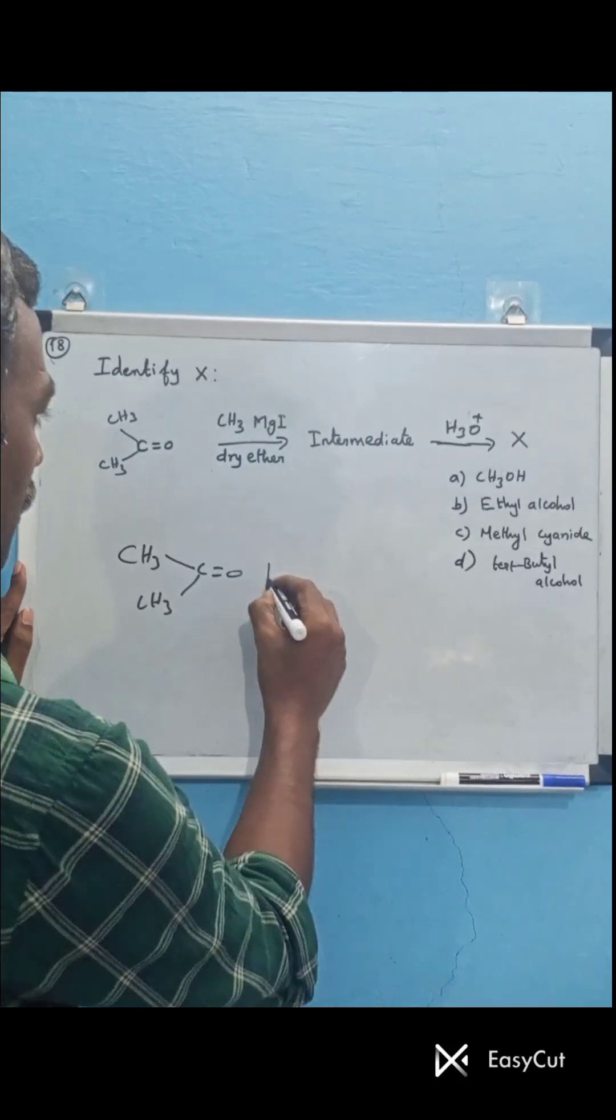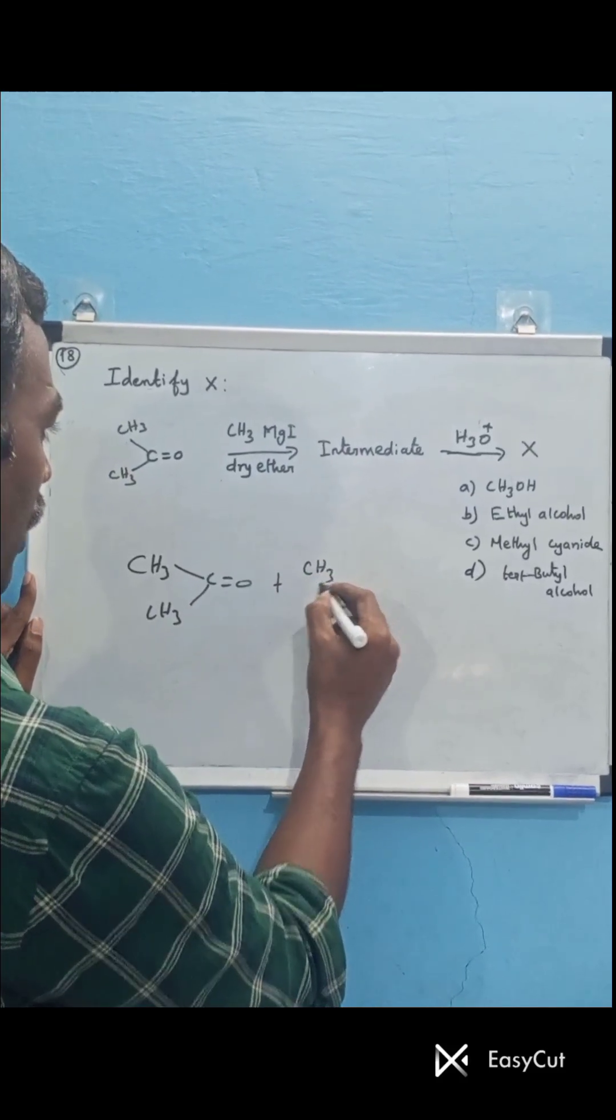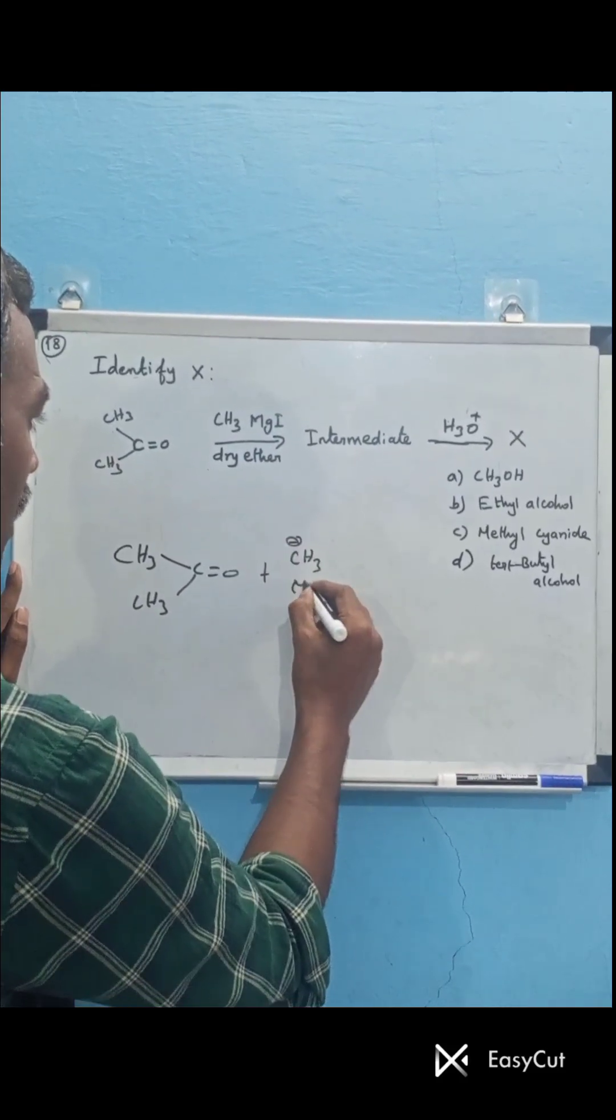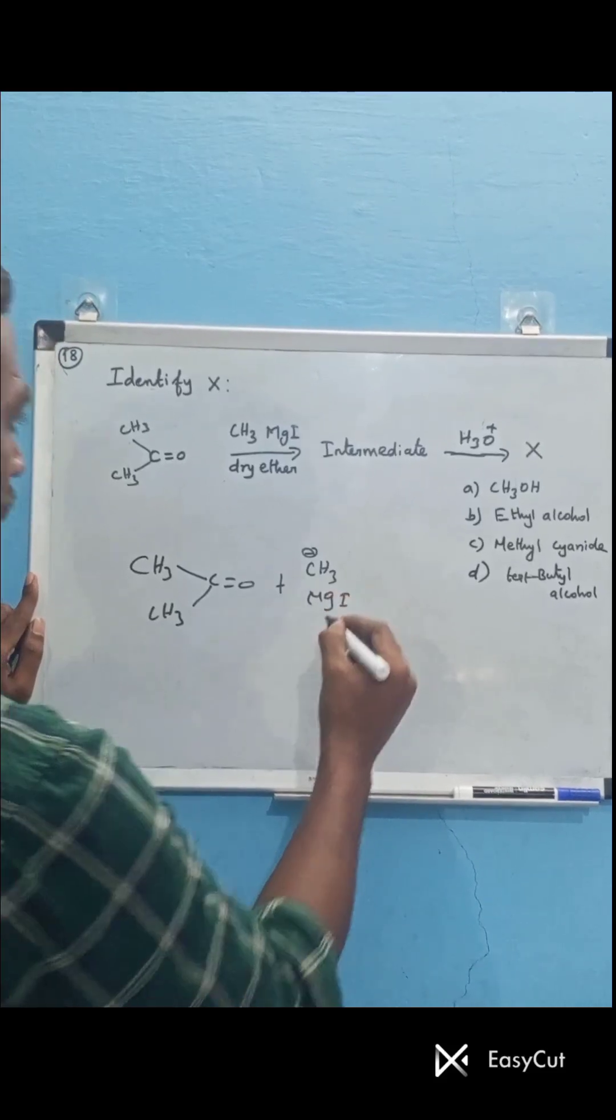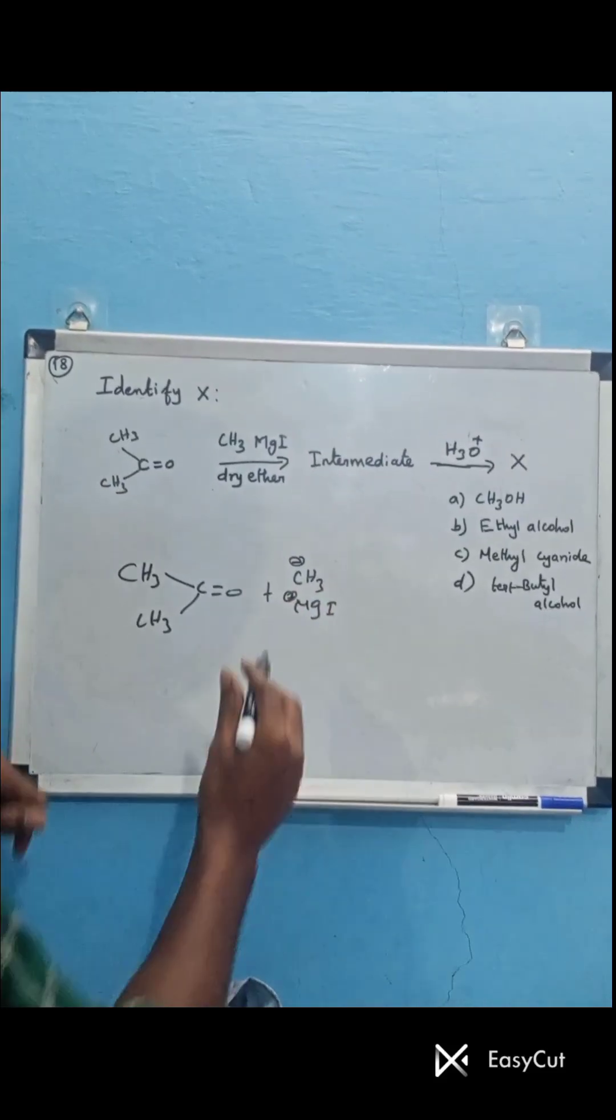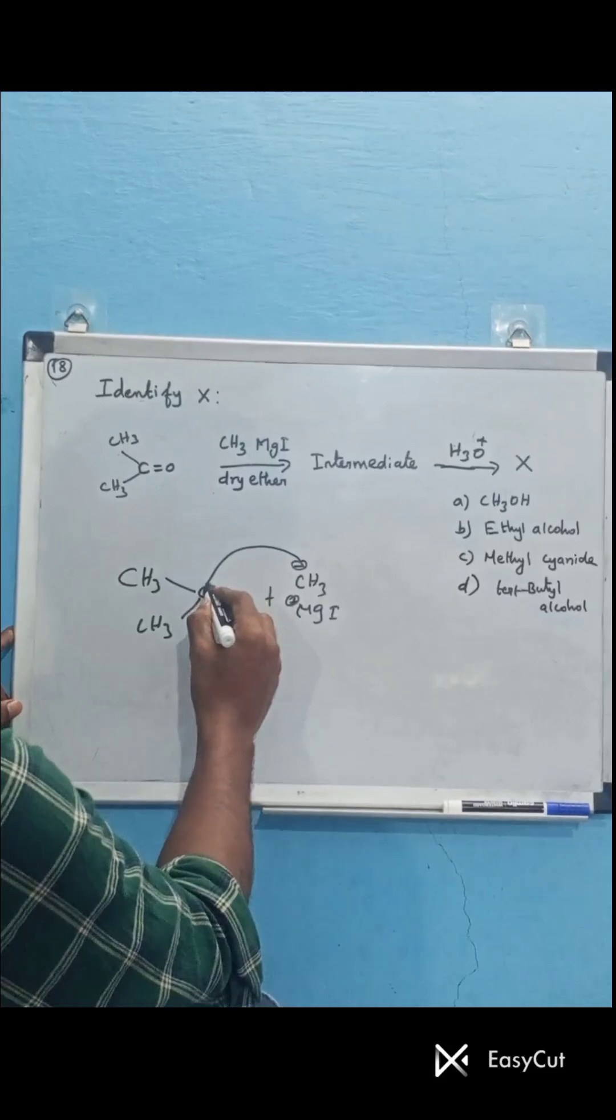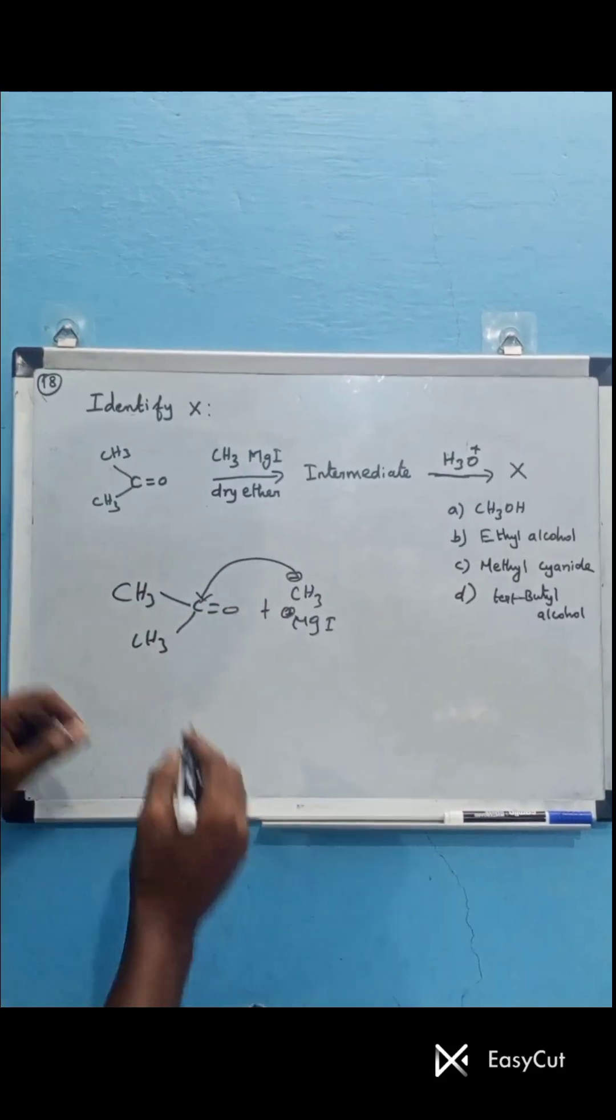Let's see how to find out X. Acetone reacts with methyl magnesium iodide, a Grignard reagent. The nucleophilic methyl group attacks the electrophilic carbonyl carbon of acetone.